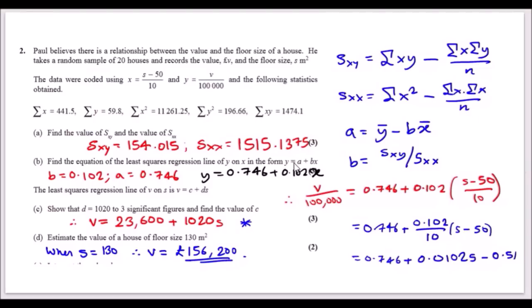For part b, find the least squares regression line y = a + bx. First calculate b = Sxy / Sxx, giving approximately 0.102. Then calculate the means: y-bar = 59.8/20 and x-bar = 441.5/20. Plug into a = y-bar - b·x-bar to get a ≈ 0.746. The regression line is therefore y = 0.746 + 0.102x.